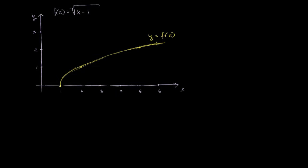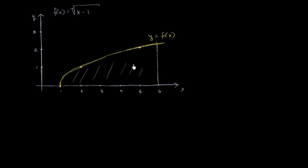For fun, let's try to approximate the area under the curve y equals the principal root of x minus 1, between x equals 1 and x equals 6. I want to find or at least approximate this entire area.